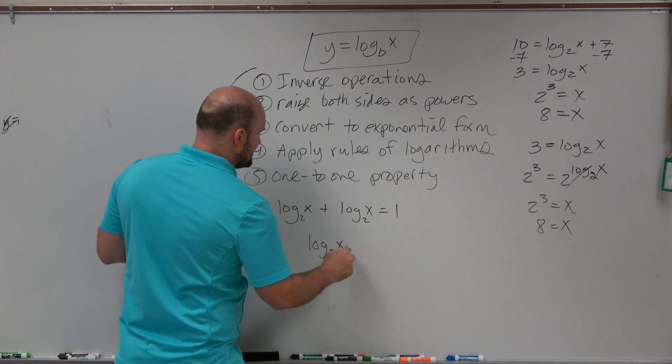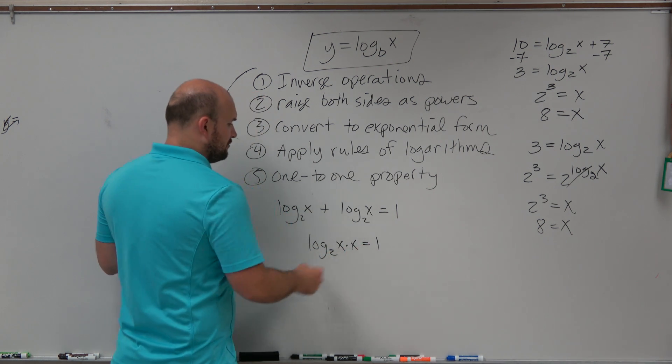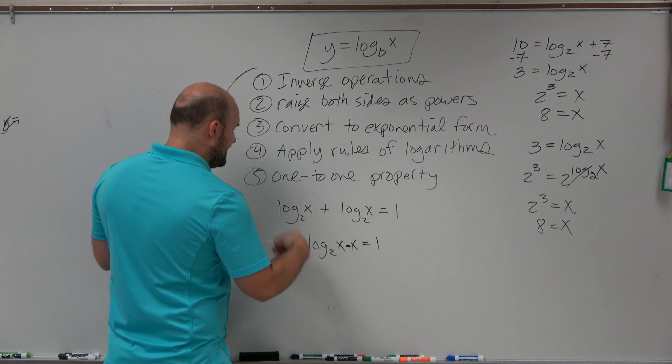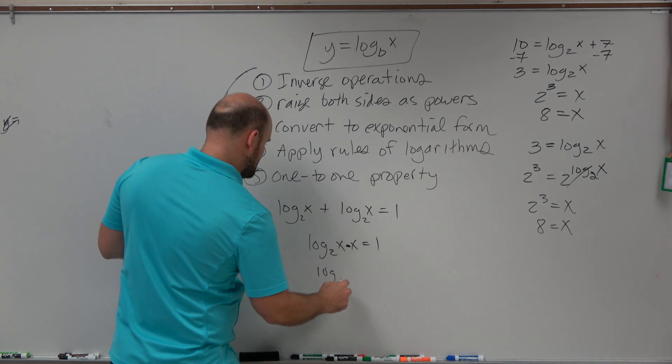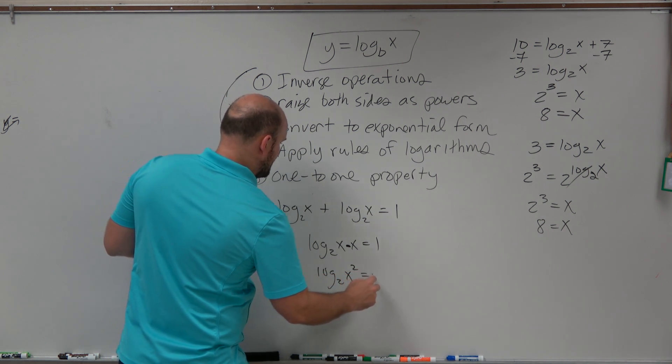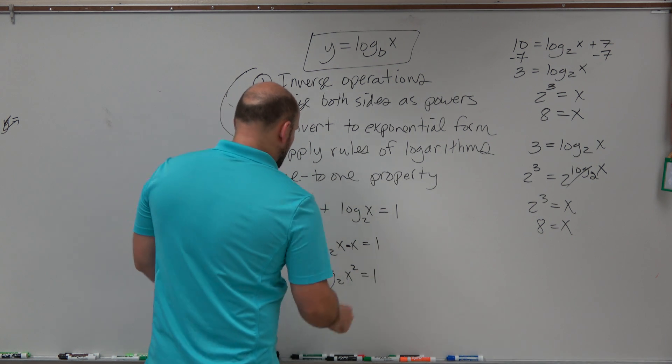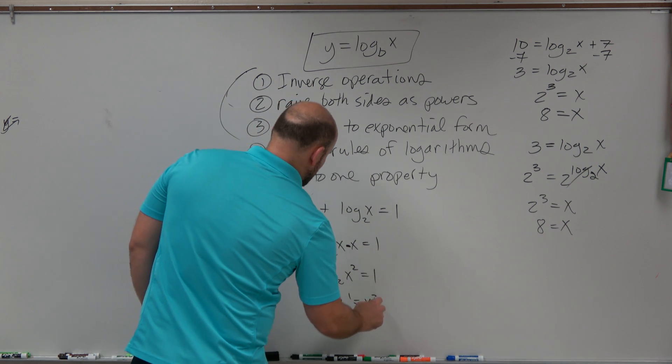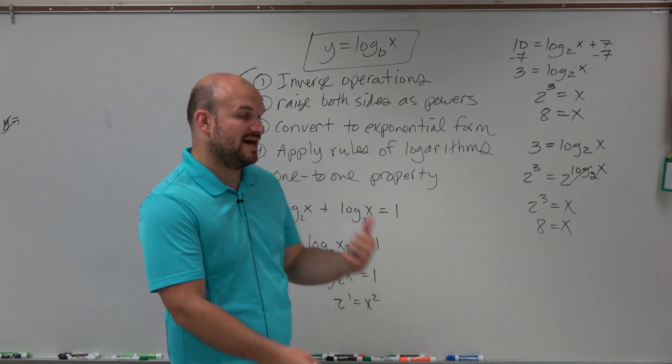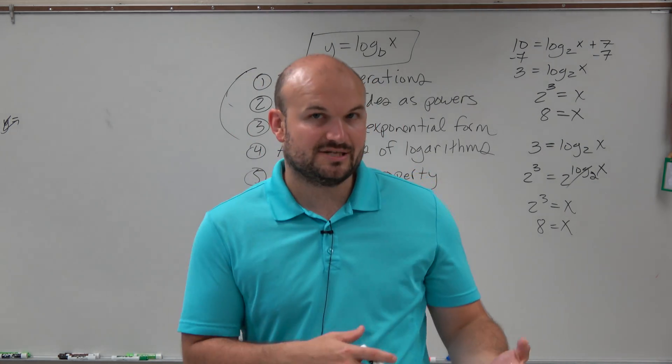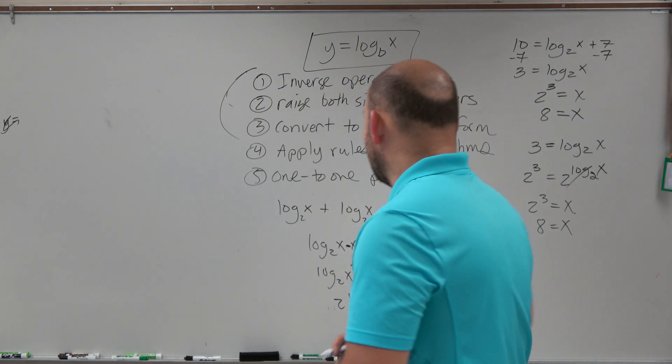So this would be log base 2 of x times x equals 1. And then I could say log base 2 of x squared equals 1. And then say 2 to the first power equals x squared. Now what's important about this is when we have multiple x's, in this case, we got to look for our extraneous solutions, right?